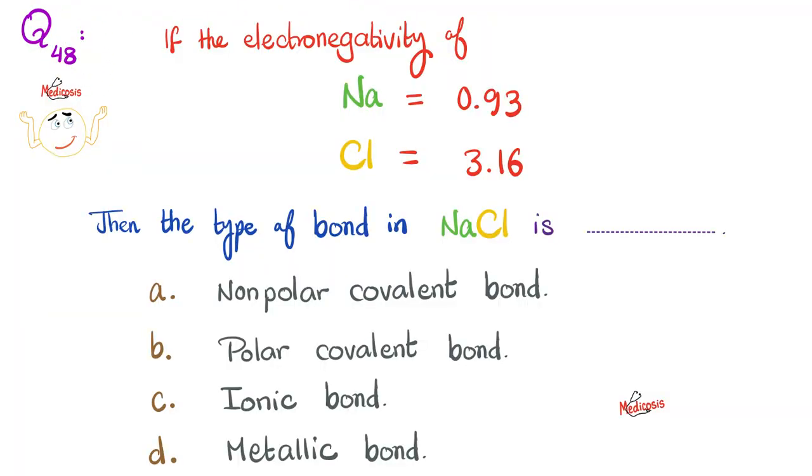Let's start by answering the question of the previous video. If the electronegativity of sodium is 0.93 and of chloride is 3.16, then the predicted type of bond in sodium chloride is non-polar covalent, polar covalent, ionic or metallic. Can you answer this yourself? Please pause.